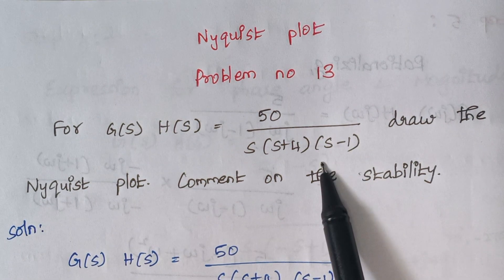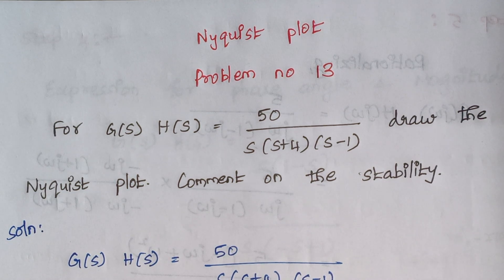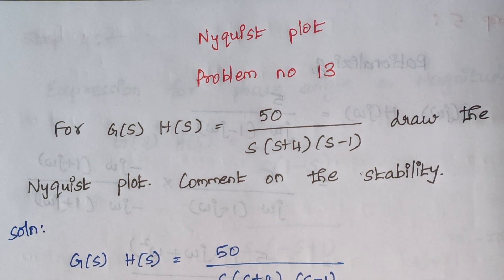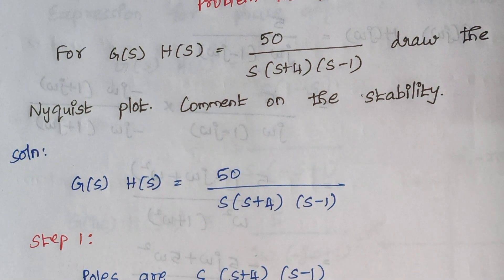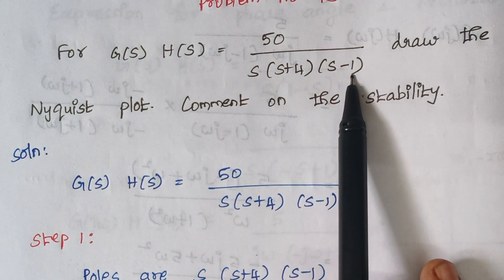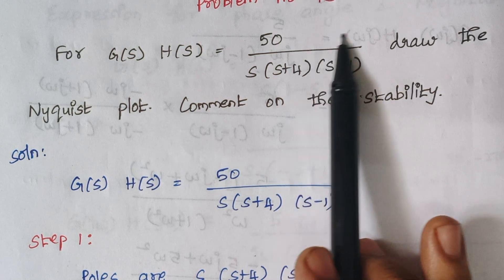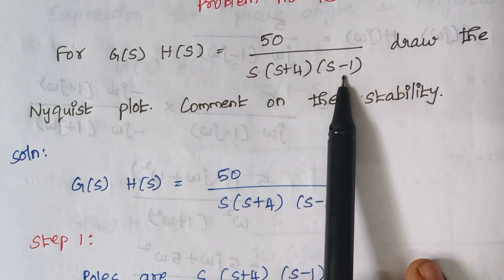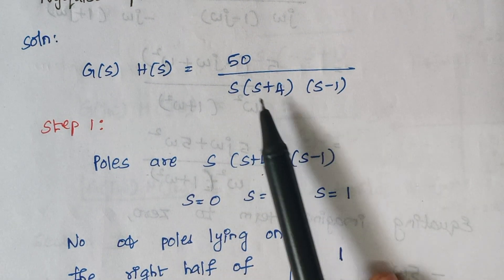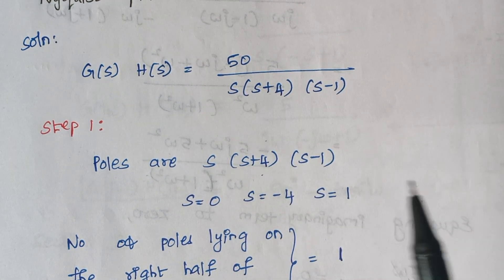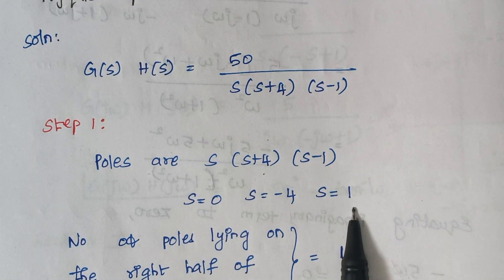A transfer function is given and we have to finally conclude whether the system is stable or unstable. The first step is we have to find the number of poles lying on the right hand side of the s-plane. The denominator terms are known as poles and the numerator terms are zeros. Here there are no zeros — only three poles. Equating these three terms to zero, the values of the poles are zero, minus four, and one.